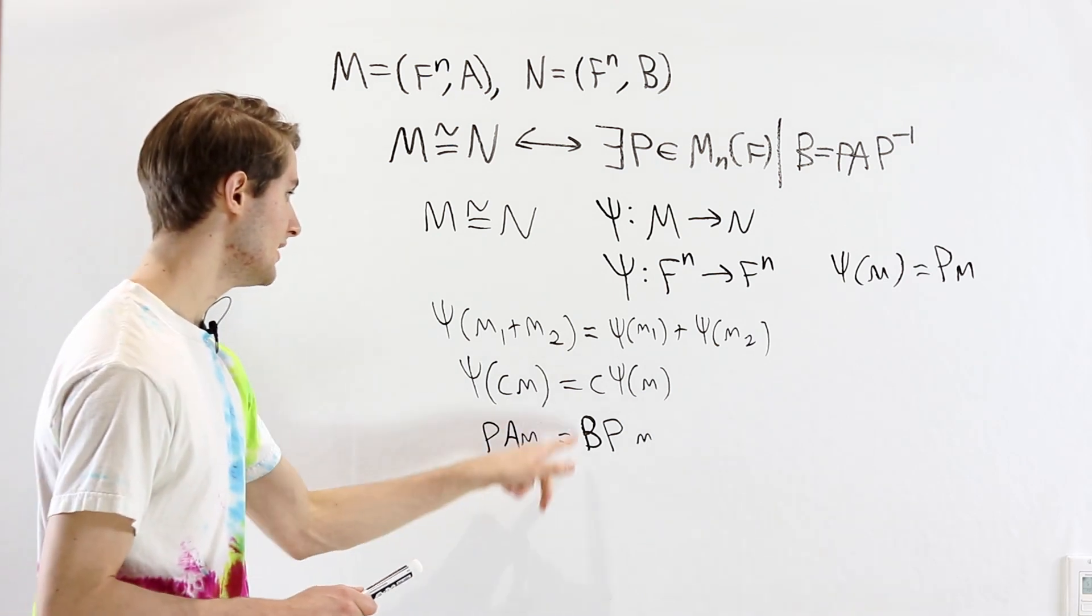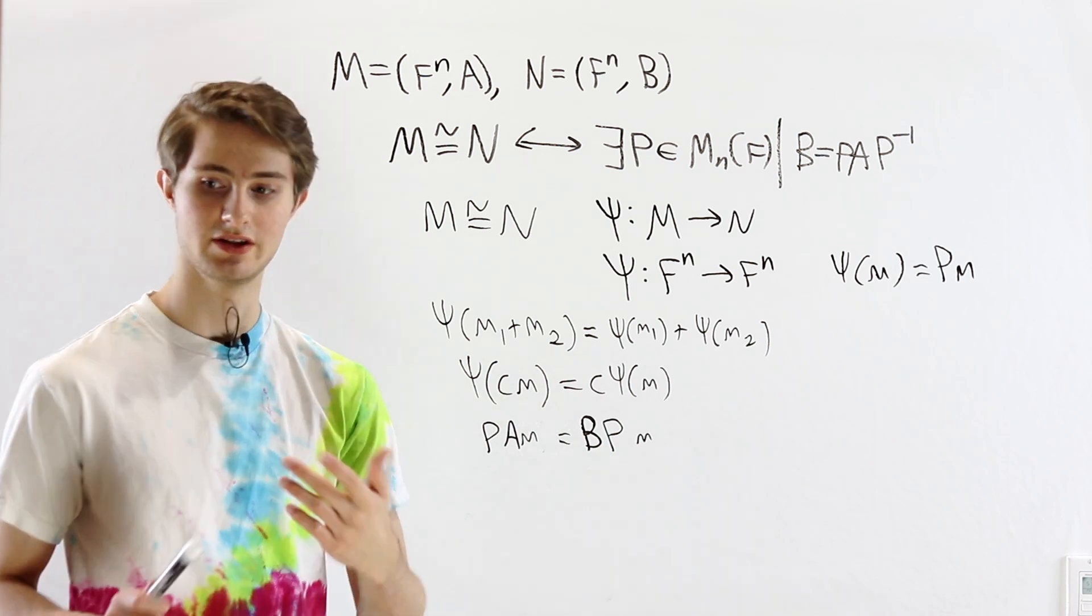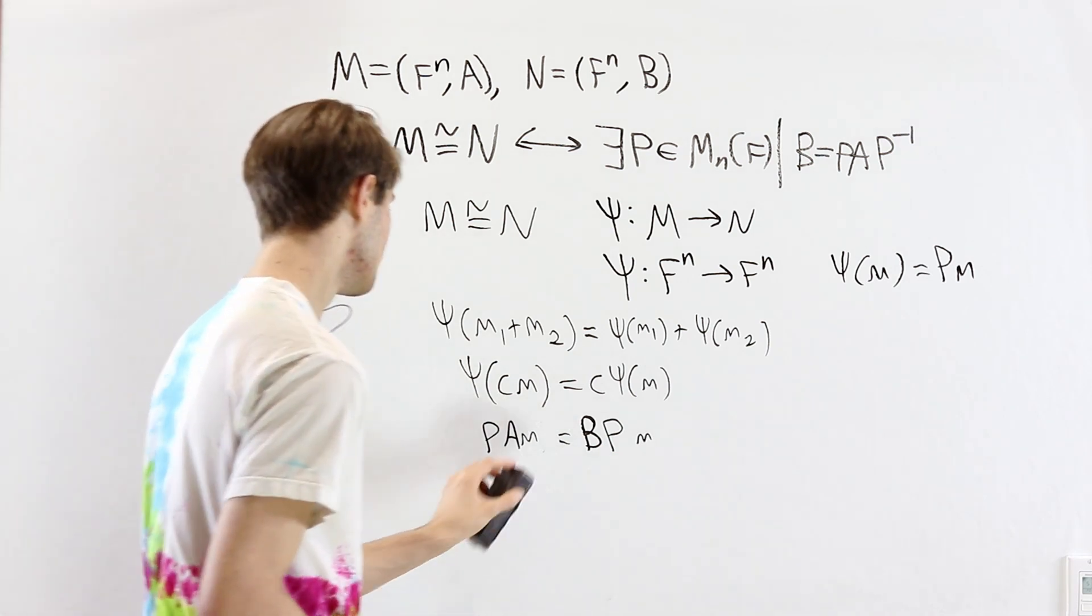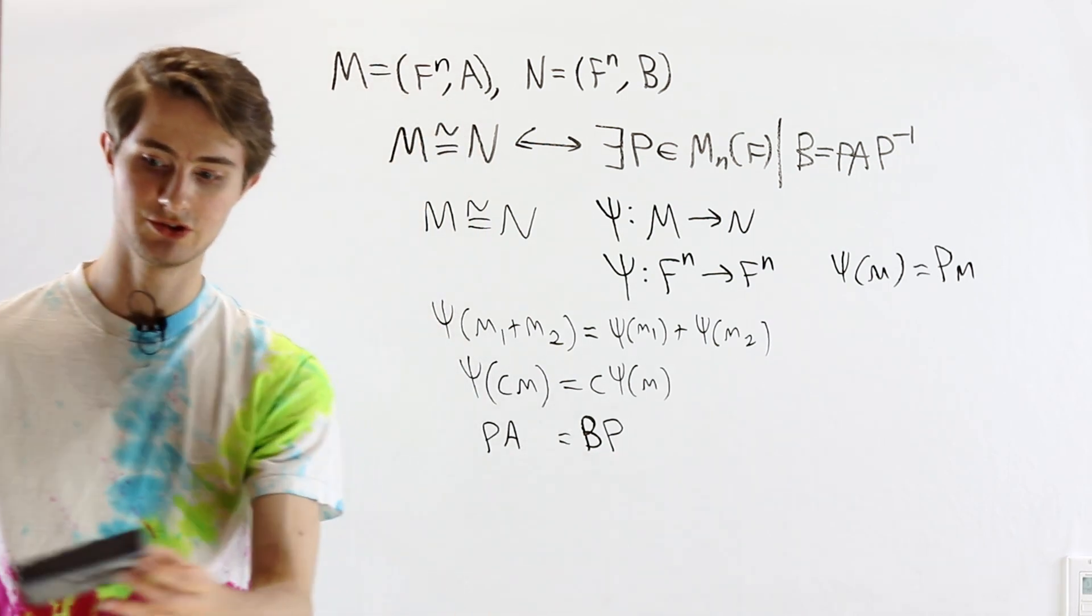Now, we want this equation to be true for every single possible vector m in F^n. But the only way this is true for every element of F^n is if these two matrices are the same matrices. So that means that we get as a result PA equals BP.